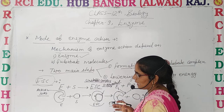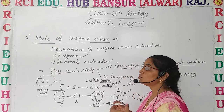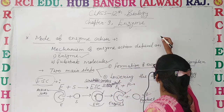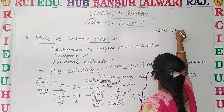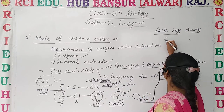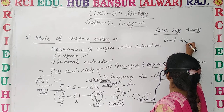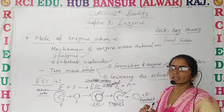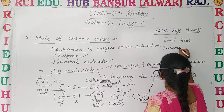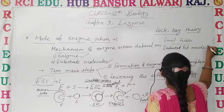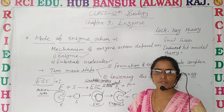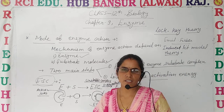This mechanism can be explained through two theories. The first is the Lock and Key Theory, given by Emil Fischer. The second is the Induced Fit Model Theory, given by Koshland. We will discuss these in another video.